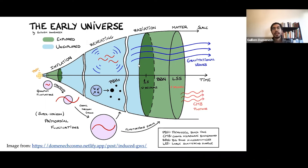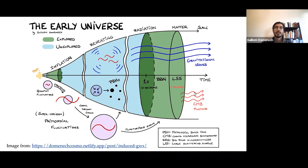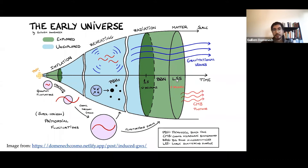Somehow inflation ends and we reach the standard Big Bang cosmology — a universe filled with radiation. From roughly one second after the Big Bang, we know pretty well what happened: Big Bang nucleosynthesis, then photon decoupling, which is what we see as CMB photons. The CMB anisotropies tell us about the first few e-folds of inflation. But how can we learn anything about the unknown period? Electromagnetic waves can only travel so far.